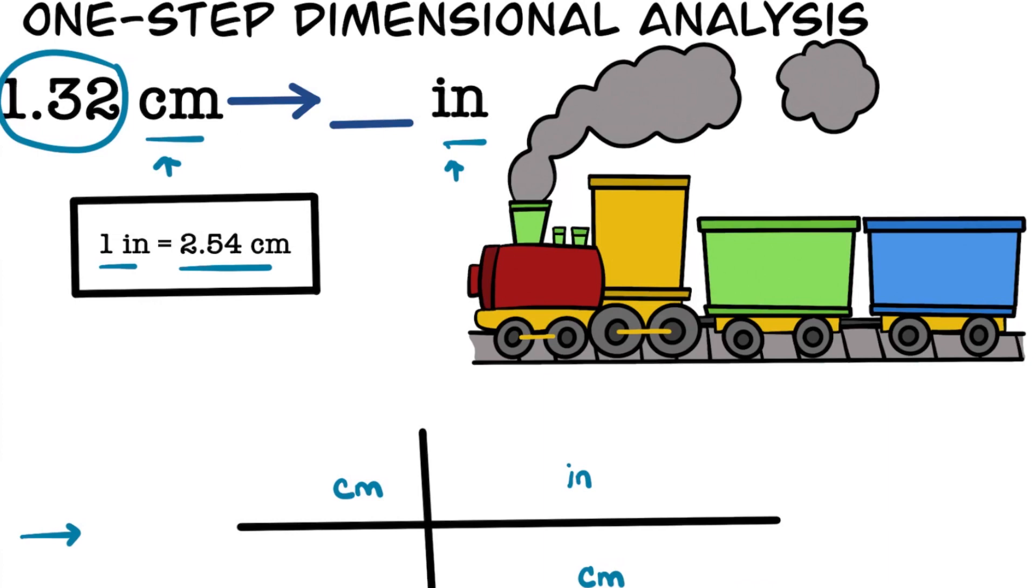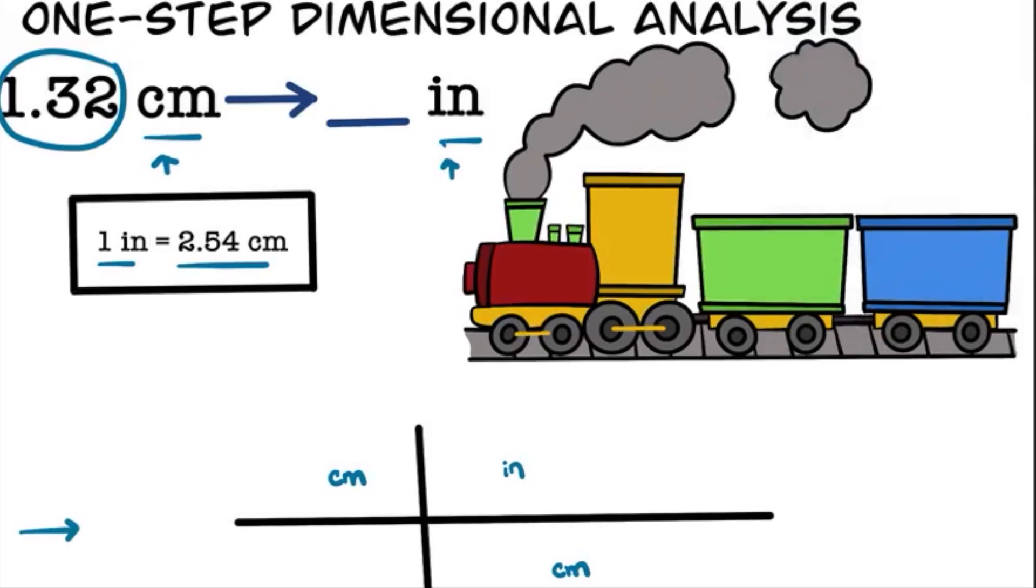Now how do we fill in this train track? We're going to start with what we want to convert, or 1.32 centimeters, on the top left. Now we just fill in the rest of the boxes. Since we know that there are 2.54 centimeters in one inch, we will always put 2.54 centimeters down here and one at the top. Any conversion rule that we have will always be right on top of each other in the train track.